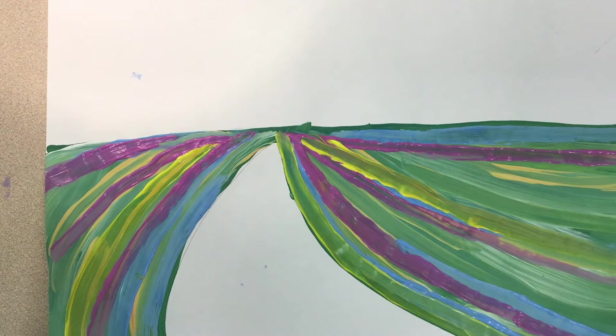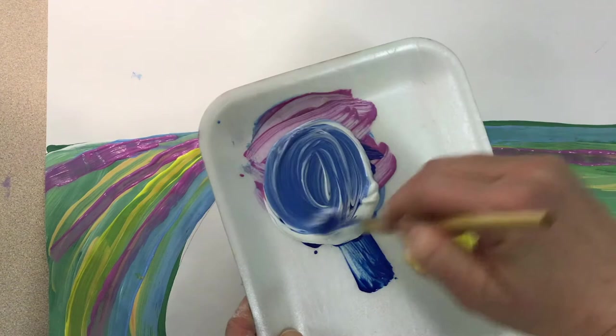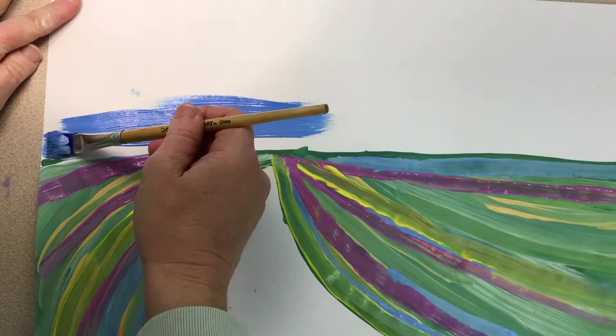Now we're going to start painting the sky. So, we're going to make our brush strokes go horizontally across the sky the same way that the horizon line goes, so left to right.